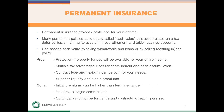Permanent insurance, as mentioned, builds cash value, and how that cash value builds is what makes permanent insurance policies different from each other. Permanent insurance also has a death benefit. The insurance company collects a premium, takes a portion out to cover the cost of the death benefit and expense charges, and the remaining amount gets invested. How that gets invested and how it grows is what makes permanent policies different from each other.